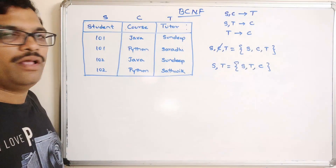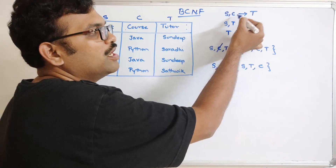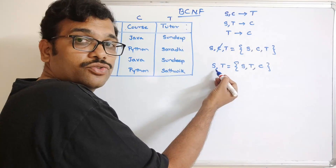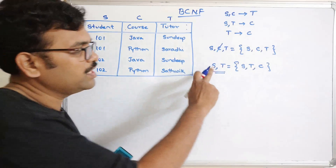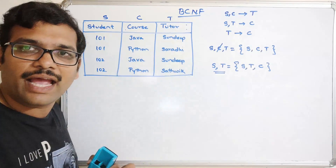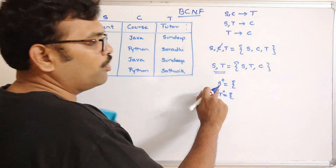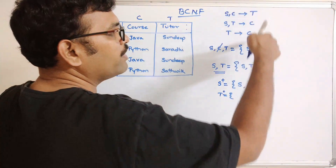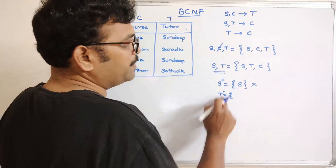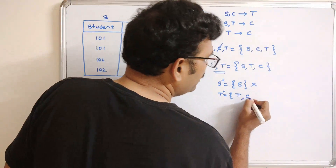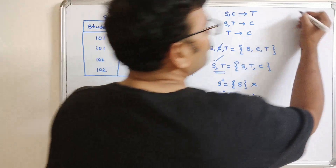We need to check if we can reduce S,T further. The closure of S alone gives only S — not a candidate key. The closure of T gives T and C, but not S — so T alone is not a super key either. Therefore S,T is a candidate key. Now let us check for other candidate keys using prime attributes.